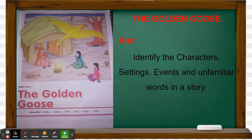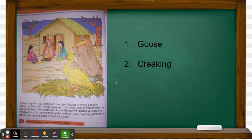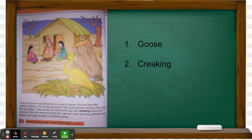On page number 10, you can see them sitting very sad. By their looks they appear very poor, and the golden goose is observing them. The goose has magical powers. They live in an old mud house with a door that makes a creaking sound, and they gather old leaves and twigs to make a small fire.